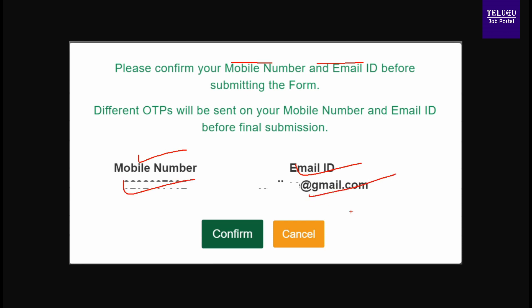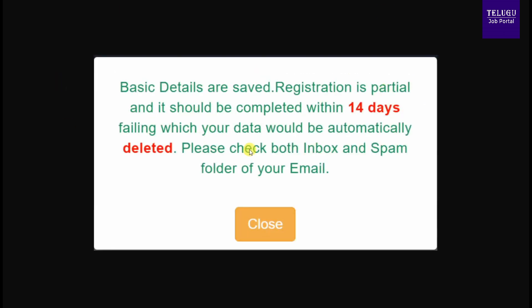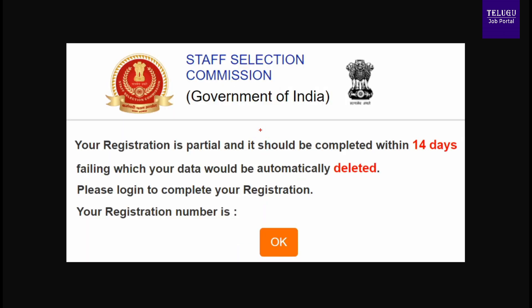If you want to verify your mobile number, you can check the two OTP counts. If there is any error, you can cancel and go back. Verify your mobile and email separately. Once basic details are submitted, they will be stored in the SSC database for 14 days to allow you to complete the remaining process. You will then receive your registration number.